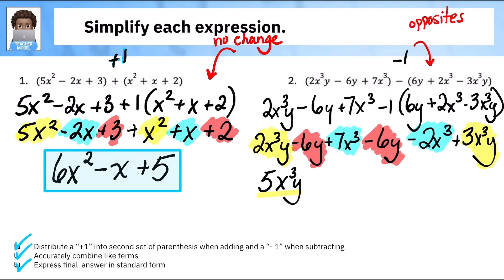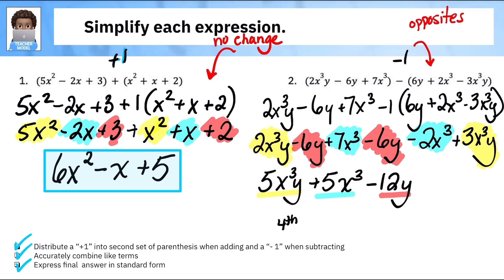Let's go to the blues next: 7 minus 2 is 5, so plus 5x cubed. And finally, negative 6 minus 6 is negative 12y. Those were my reds. Let's make sure we have everything in standard form — remember we're adding the exponents, so this is a fourth degree (three plus one), this is a third degree, and this is a first degree. It is in order, so I do have this correct. Here's our final answer.